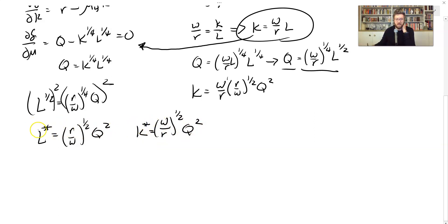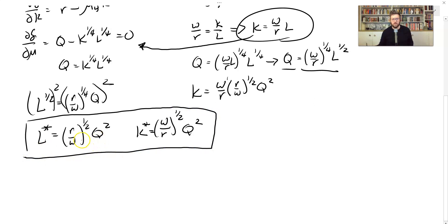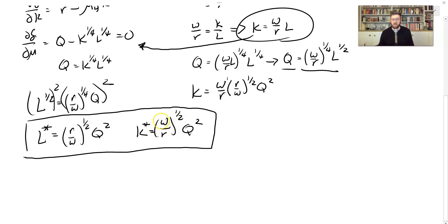These are our starred demands — functions of Q, W, and R. You can check if they make sense: if Q goes up, you need more labor, which makes sense. If W, the cost of labor, goes up, then L goes down because we're dividing by it — if the cost of labor goes up, you consume relatively less labor to minimize cost. And if W goes up, K goes up too, because you still have to produce Q — you use less labor and more capital since capital is relatively cheaper.